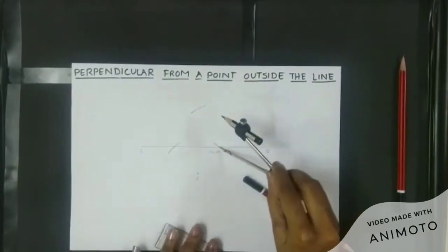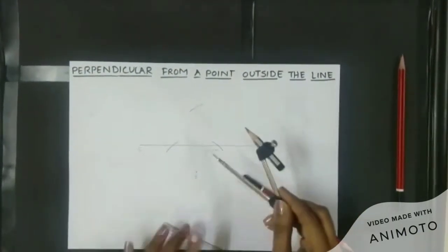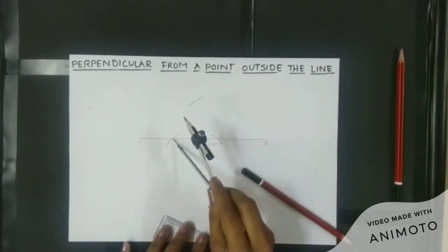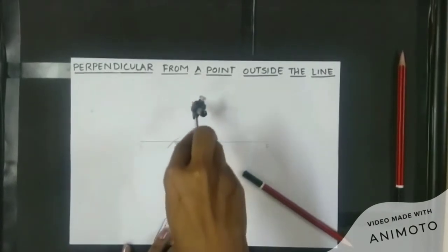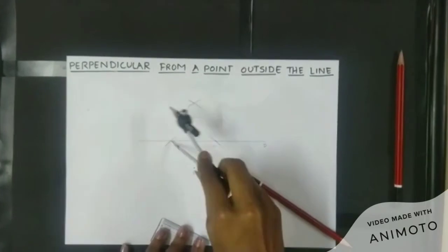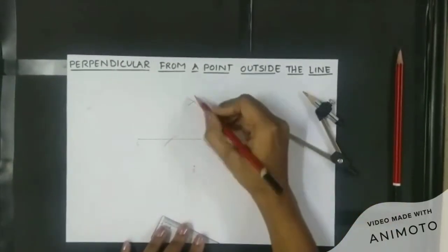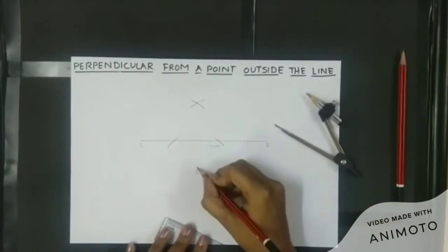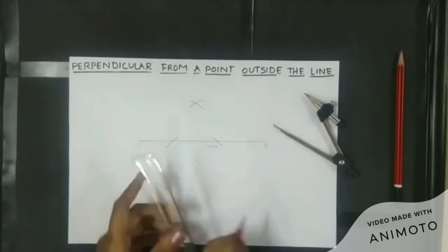Keeping the same distance on the other side of the arc, make another arc that will intersect your previous arc. Now this endpoint and S, the outside point, we have to join to make a perpendicular.